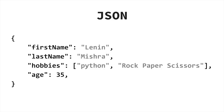Let's see how a JSON looks. This is the basic representation of JSON data. You can see values are separated by keys and values, which are separated by colons. Now on first look you might think this looks like a Python dictionary. However, even if it does look like a Python dictionary, there are differences between a dictionary and JSON.